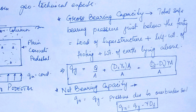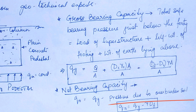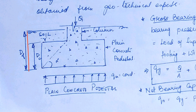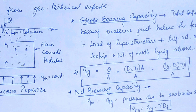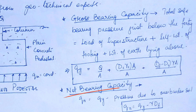Now, net bearing capacity is nothing but Q_gross minus the pressure due to overburden soil. The pressure due to overburden soil is γ·DF. So subtracting Q_gross minus γ·DF gives you the net bearing capacity of the soil.